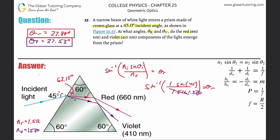Since all angles in any triangle add up to 180 degrees, we can find the third angle of the triangle formed inside the prism. We take 180 minus 60 minus 62.12, which gives us 57.88 degrees. That's the angle at the exit face inside the prism for the red ray.